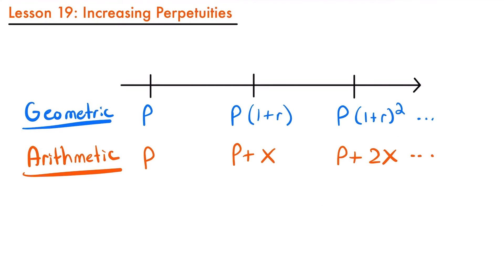Welcome back. Today we're going to be talking about increasing perpetuities. So far we have looked at annuities that have payments that change each period and form either a geometric or arithmetic progression, but now we want to look specifically at the present value of perpetuities whose payments form these progressions as well.